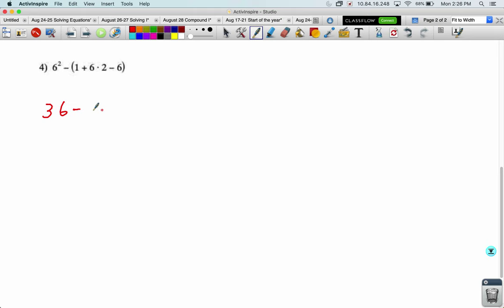Minus, I can start simplifying inside this parentheses too. I'm going to start with the multiplication because that comes before addition or subtraction, so one plus twelve minus six. Now I've got addition and subtraction I go left to right inside here, thirty six minus thirteen minus six. Rewriting it every time thirty six minus seven, final answer twenty nine.